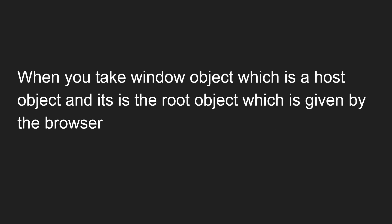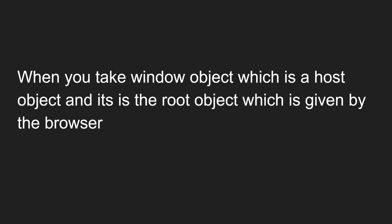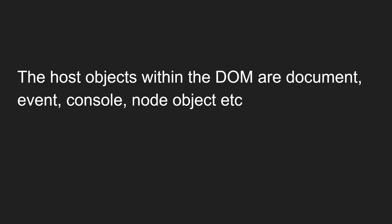Whereas native objects are permanent — those core predefined objects will be available wherever you run JavaScript. The window object is a host object and it is the root object provided by the browser. When you run JavaScript in the browser, the window object is made available by the browser as the root object. The host objects within the DOM include document, event, console, and node objects.